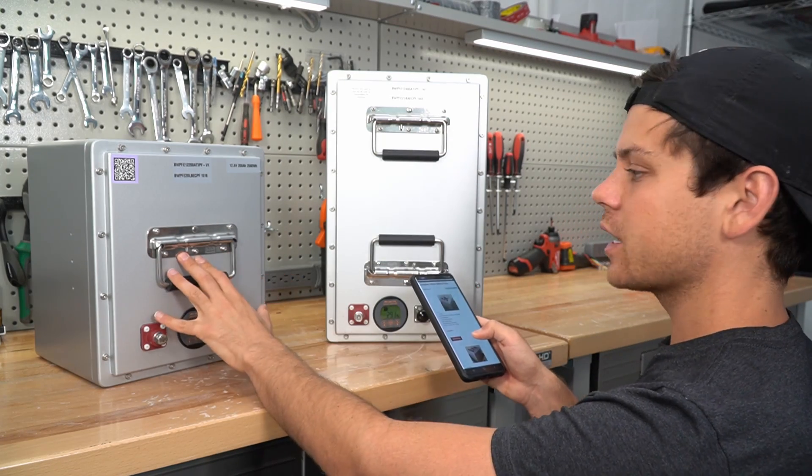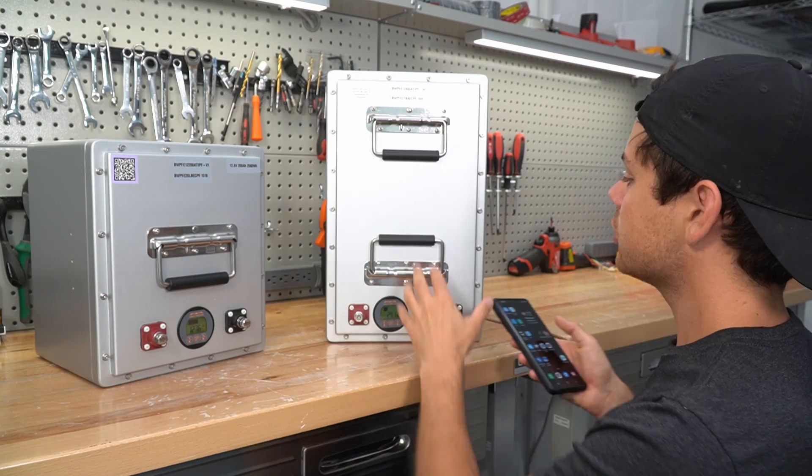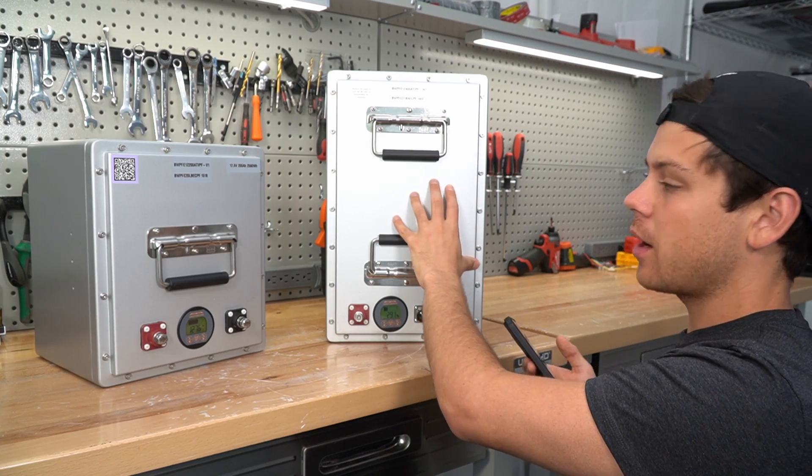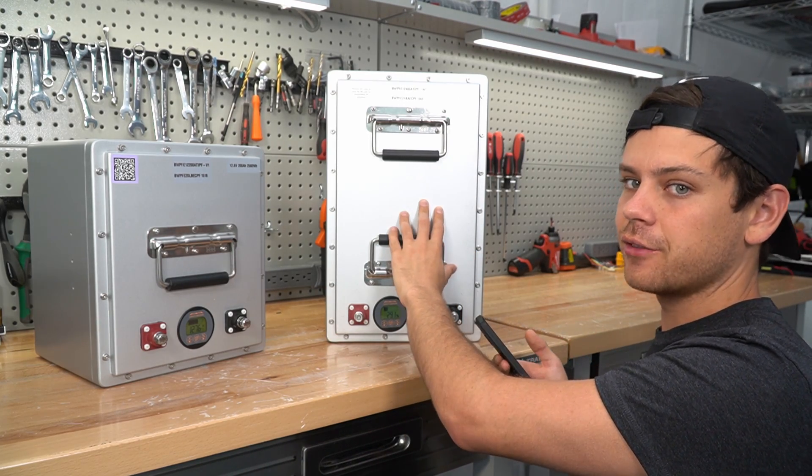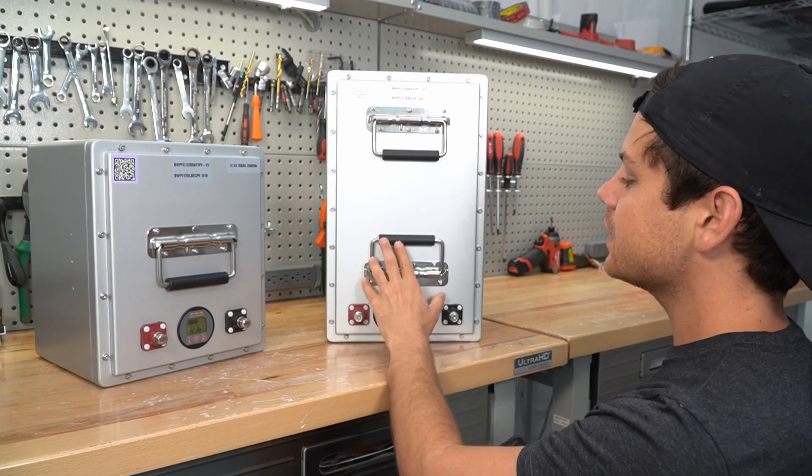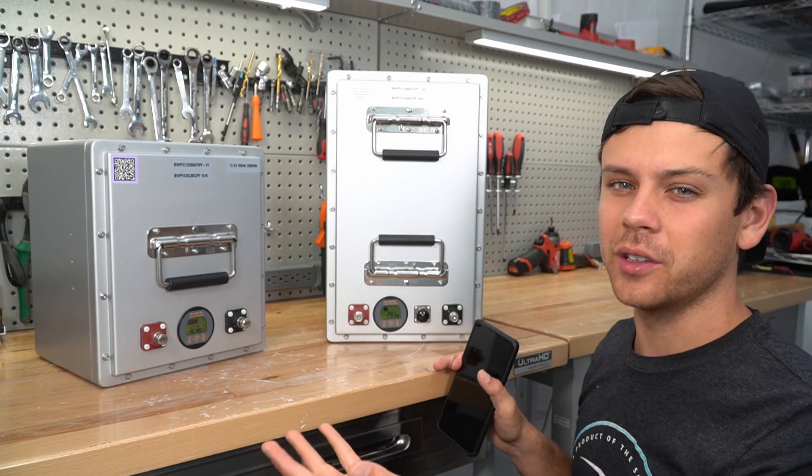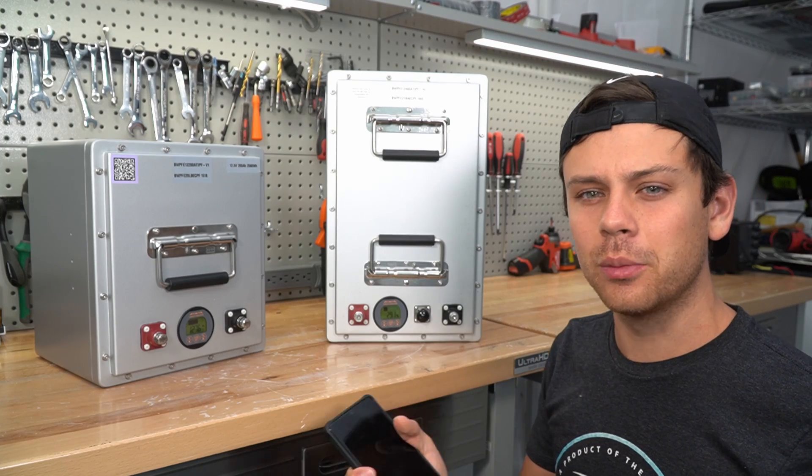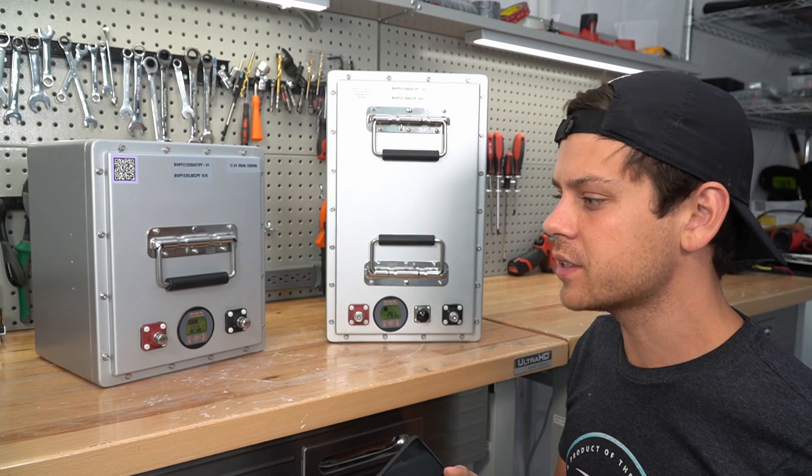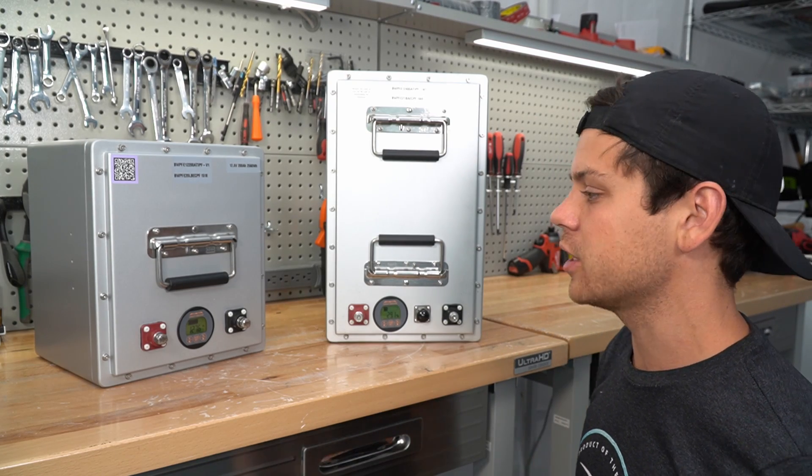But yeah, I would probably go with SOK personally. But if you have the money and you really want good build quality, these are really nice. So this one's very expensive, but this one is quite a bit cheaper actually. So for a 48 volt 100 amp hour of this model, you can get it for $2,430. Which means it's the equivalent of $600 per 100 amp hour 12 volt.